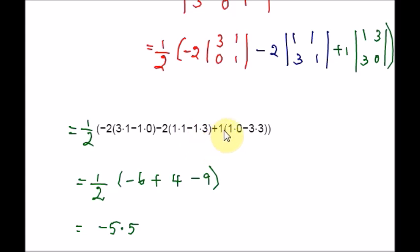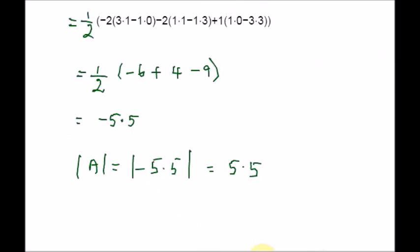Here we received a negative value for the area, and we know that area cannot be negative. Therefore, we must take the absolute value of A. The absolute value of negative 5.5 is 5.5. Please make sure you take the absolute value to avoid negative answers, because area cannot be negative. So the triangle's area is 5.5 square units.